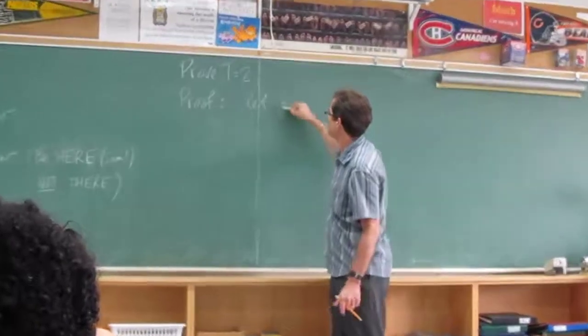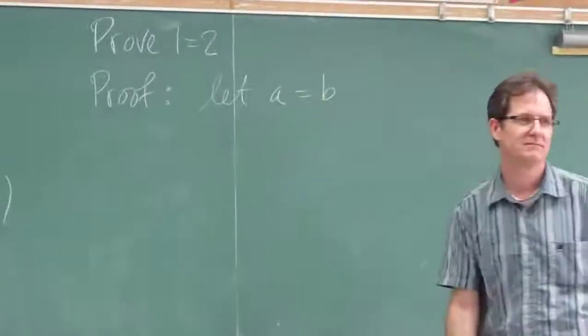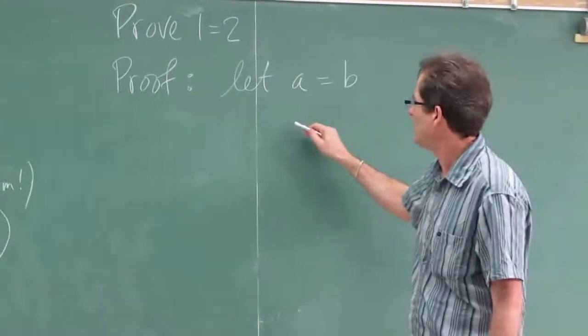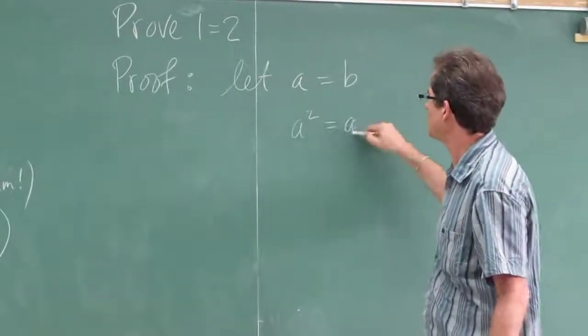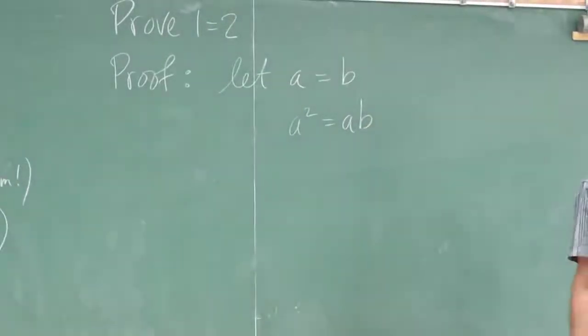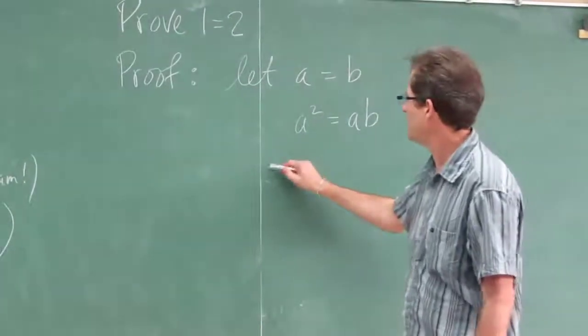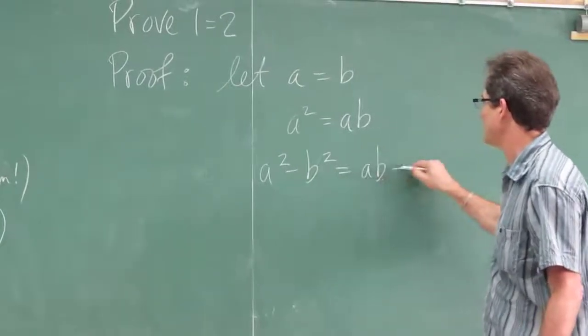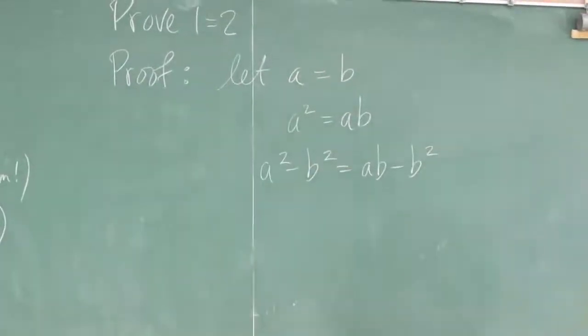So prove. Let, for example, a equals b. Whatever a is, b is the same number. Then multiply both sides by a. You get a squared equals ab. Then subtract b squared from both sides. All legal operations.